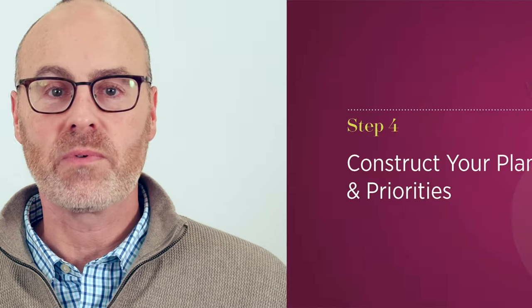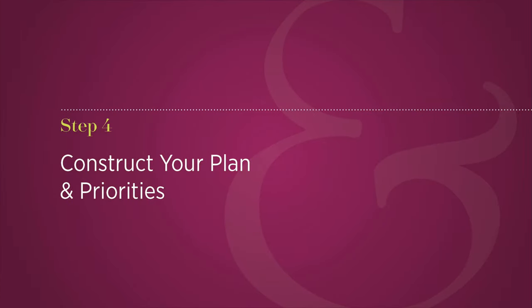The fourth step in creating a digital communication strategy is just to bring it all together. Start getting everything out of your head, onto paper, on a whiteboard, and then prioritize. Prioritize based on your budget, based on your timelines, and what you think you can get done with your budget or in a certain amount of time.